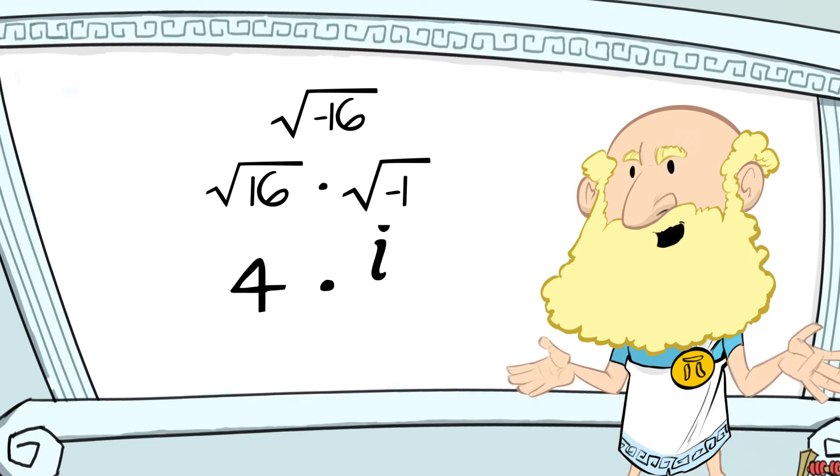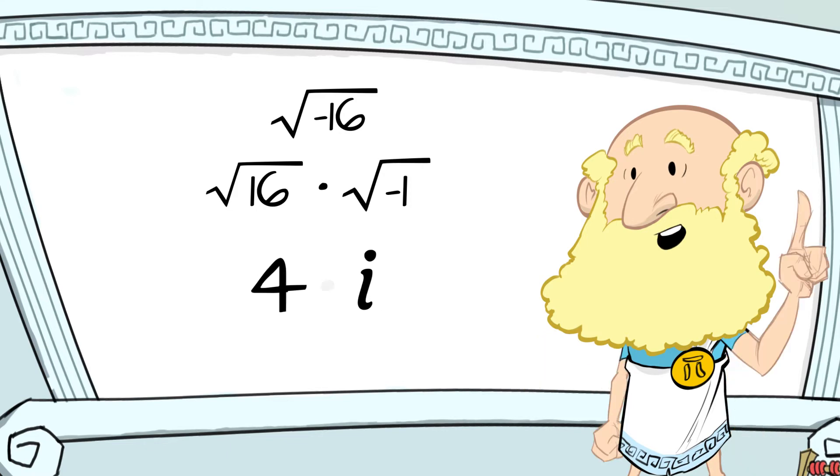Now remember, i represents the square root of negative 1. So we can replace the square root of negative 1 with i. Now we have 4 times i, or just 4i.